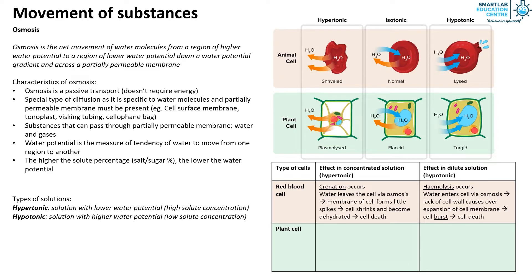If plant cells are placed in a hypertonic solution, plasmolysis occurs. Water leaves the cell via osmosis and the vacuole decreases in size. The cytoplasm shrinks away from the cell wall.